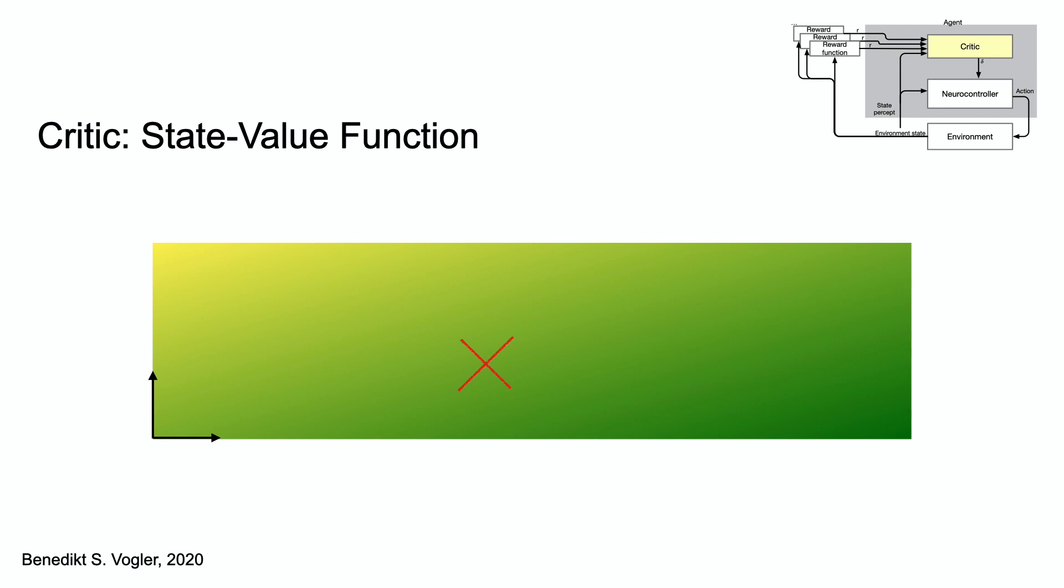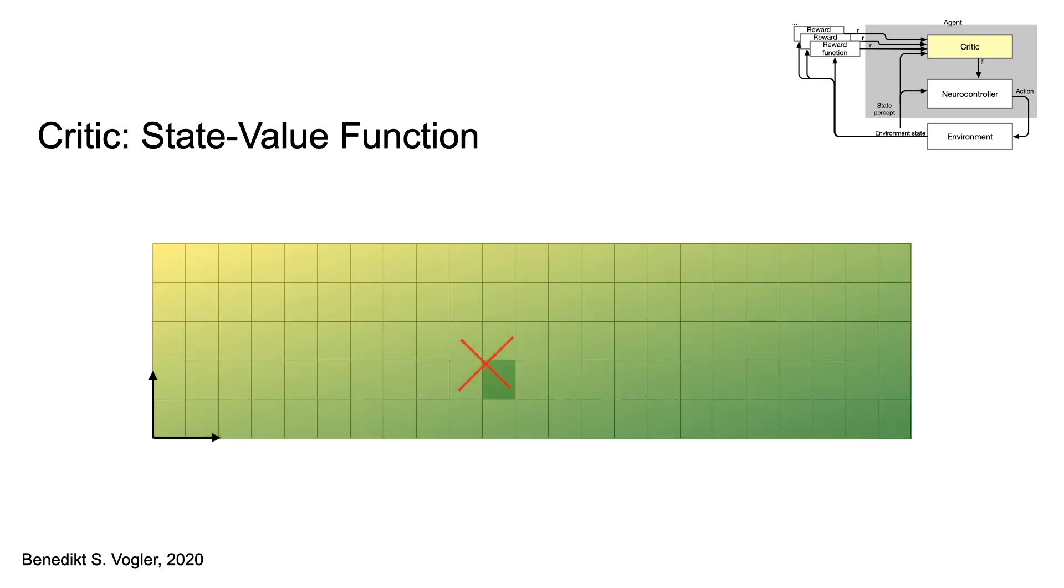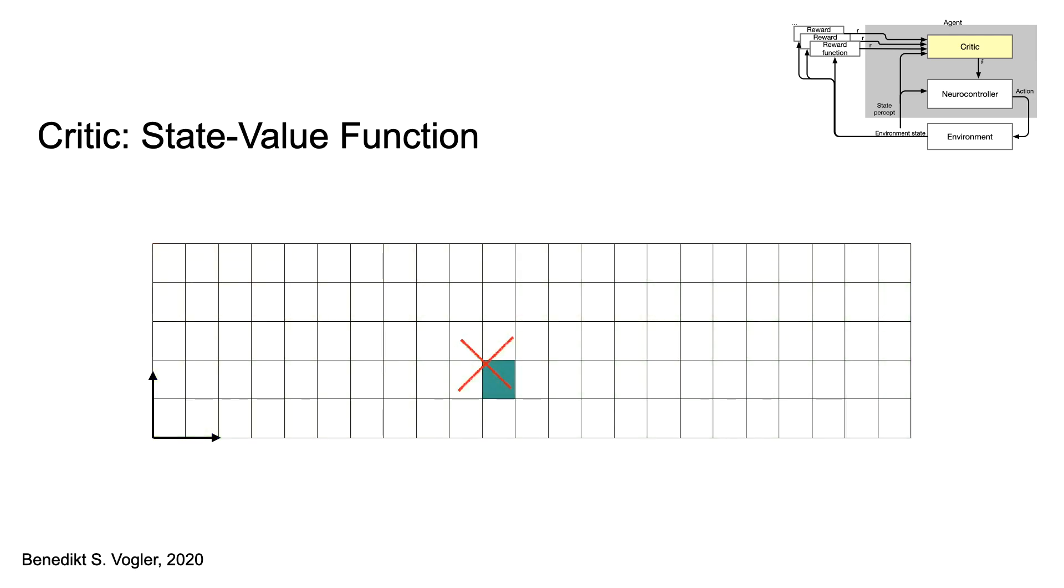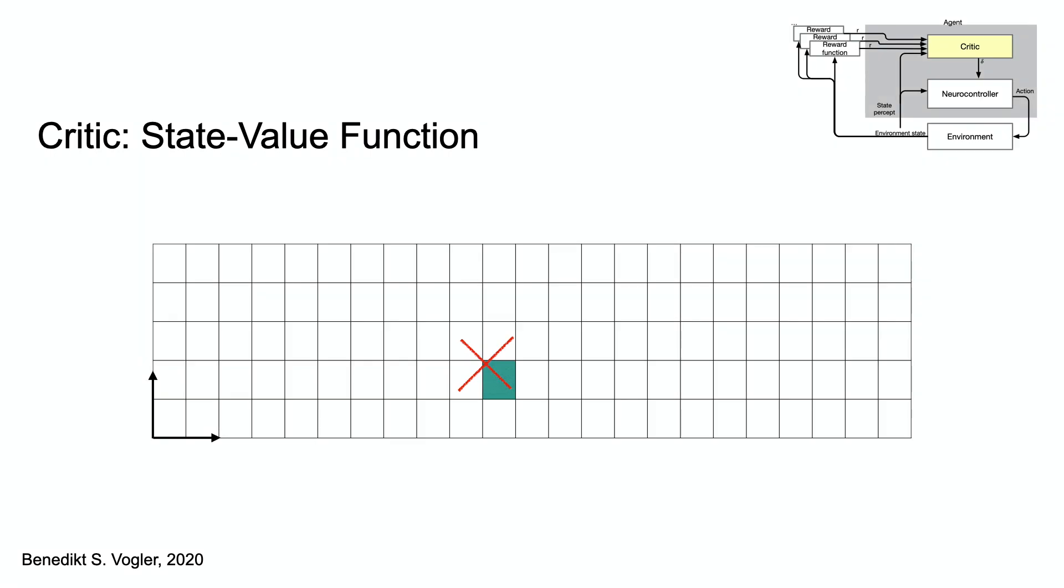The state space needs to be discretized, so many samples can land in the same cell. Once the state value function has been learned, the RSTDP training process comes to an end,